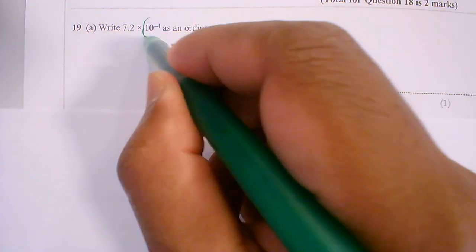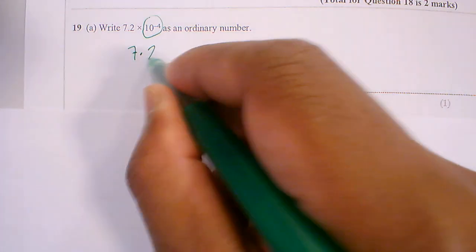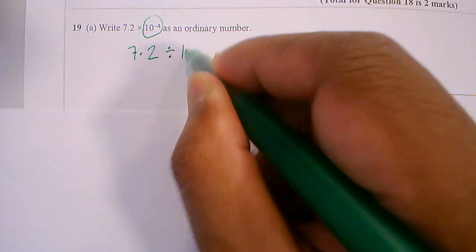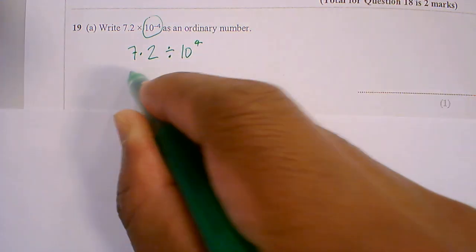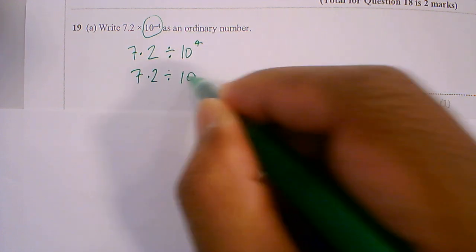So you can see there's a minus 4, so what we're doing really is we're saying 7.2 divided by 10 to the power 4, which is 7.2 divided by 1 with 4 zeros.